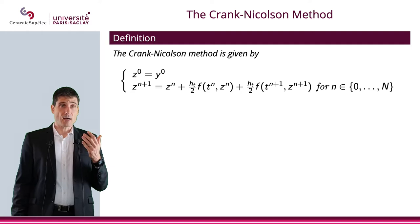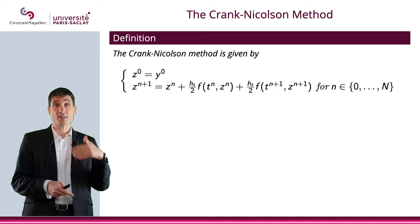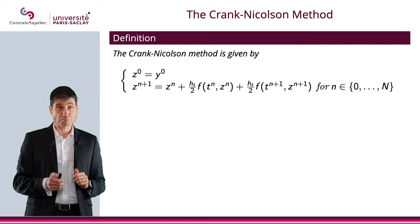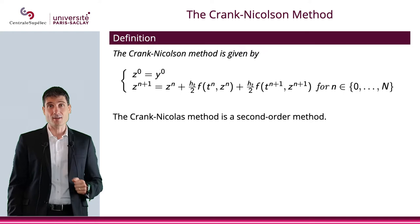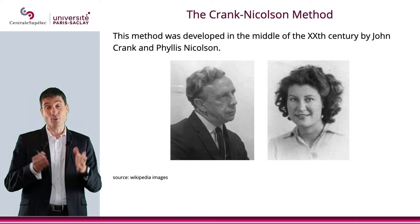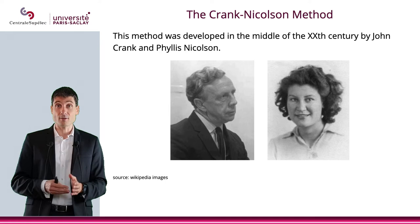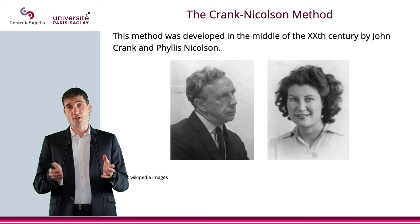The method, which will be called Crank-Nicolson, will be zⁿ⁺¹ = zⁿ + (hₜ/2)f(tⁿ, zⁿ)—that's the left point—plus (hₜ/2)f(tⁿ⁺¹, zⁿ⁺¹)—that's the right point. The Crank-Nicolson method happens to be a second order method. We'll actually prove this in the problem sets. The Crank-Nicolson method was developed in the middle of the 20th century by two people, Crank and Nicolson, and it's a very efficient method because it's going to be of higher order than the Euler method.